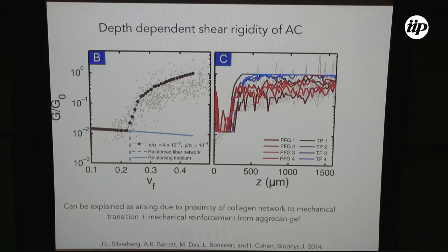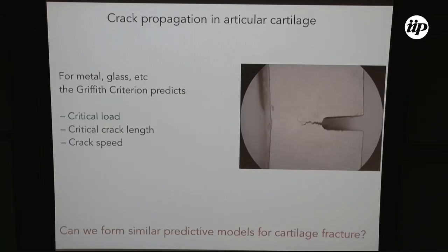I have a map: at a given volume fraction of collagen, I know the shear stiffness, and at a given depth, I know the volume fraction. So I can use that map to recreate the depth-dependent response. It seems that this rigidity percolation framework is useful in explaining the depth-dependent mechanical properties of cartilage tissue. So then we wanted to understand: can we predict propagation of cracks in cartilage using a prescription like this?